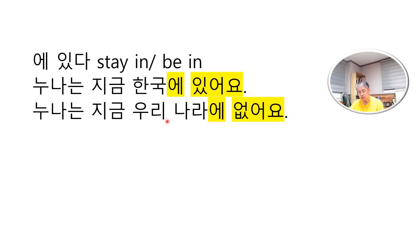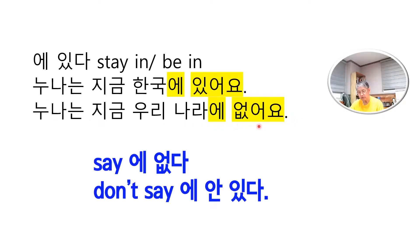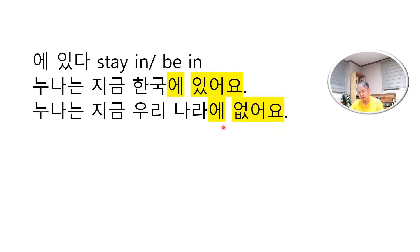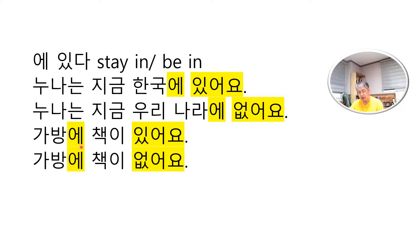누나는 지금 우리나라에 없어요. You have 에 없어요 — 에 없다 means 'does not stay in' or 'be not in somewhere.' So: my older sister is not in our country now. 가방에 책이 있어요 — even though 에 and 있어요 are separated, it still means your book is in the bag. 가방에 책이 없어요 — your book is not in the bag.